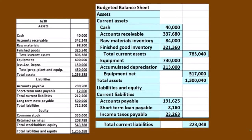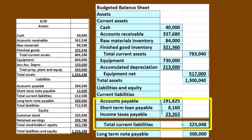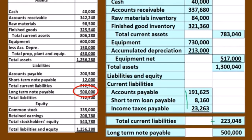Then we have the total current liabilities, which is accounts payable plus the short-term loan payable plus income tax payable added together. Then we have the long-term note payable, which doesn't change according to this problem — it was $500,000 at the beginning of the time frame. We're paying off interest only during this quarter, so the principal does not go down and we're still at $500,000.